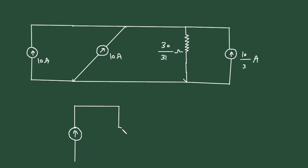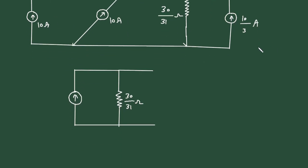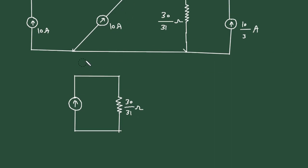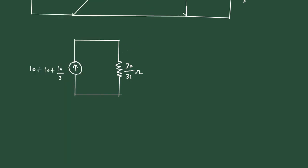The resultant current source is in parallel with the equivalent resistance of 30/31 Ω. The total current is 10 + 10 + 10/3, which equals 70/3 amperes.